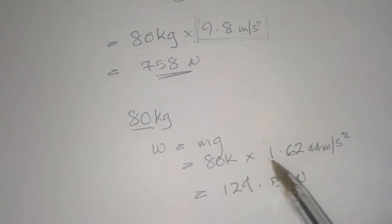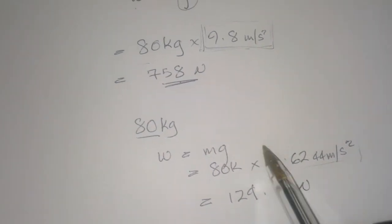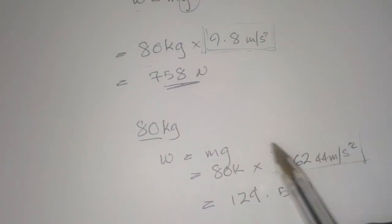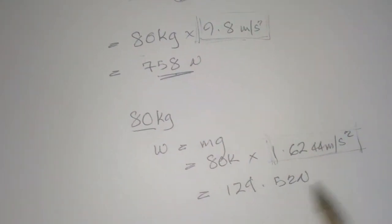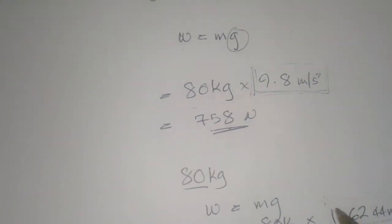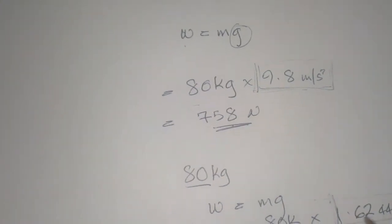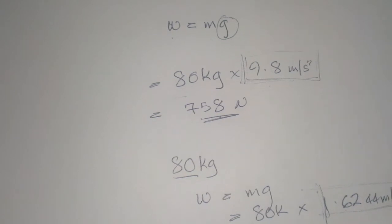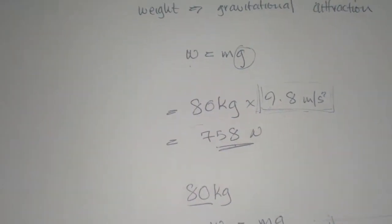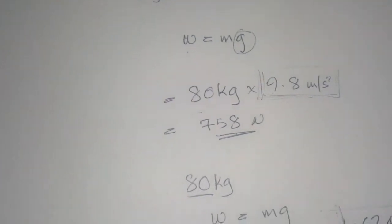That's where the difference is, and that's because the force of gravity the moon has on objects is less than that of the Earth. Objects on the moon accelerate at 1.6244 meters per second squared, as compared to the Earth where things accelerate towards the center at 9.8.